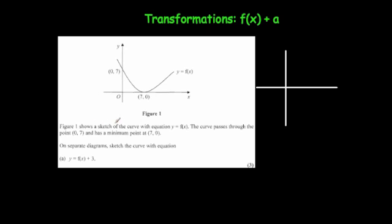Let's look at some exam questions. Here we've got Figure 1, which shows a sketch of the curve with equation y = f(x). It passes through the points (0, 7) and (7, 0). The first question says sketch the curve for f(x) + 3. What's going to happen is this curve will move three squares upwards, so instead of crossing at 7 on the y-axis it will now cross at 10 on the y-axis.